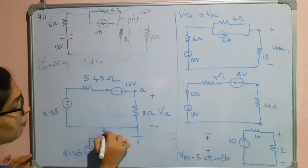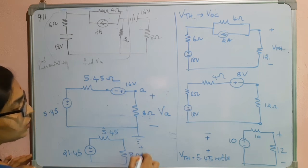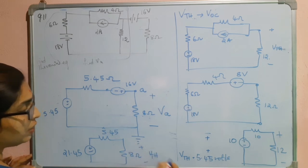This is 5.45 and here we have 8 ohm resistor. So, now, you have to find out the value of this. That is VTH.